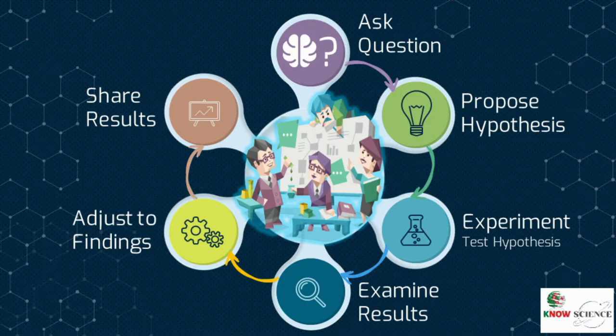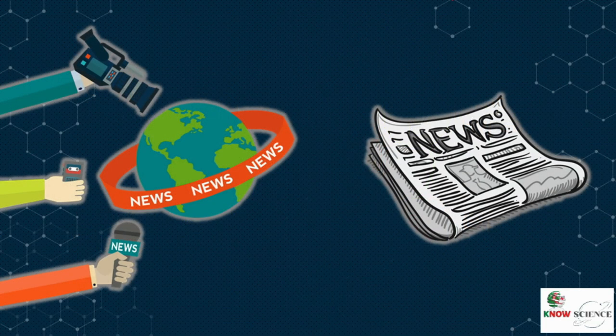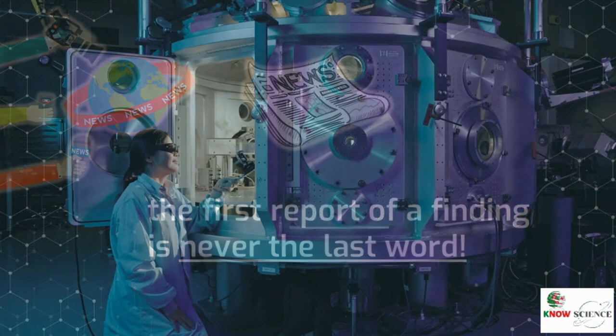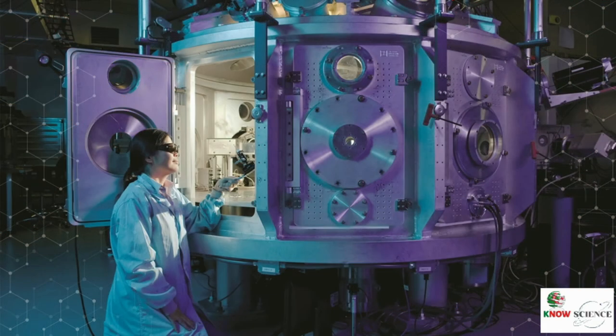Scientists share their outcomes and scientific concepts in many possible formats: an article that would be reviewed and published, a presentation at a scientific conference, a poster, or a brief report. Journalists can also quickly access the latest scientific findings and publicize them to the broader population. Consumers of this information must remember that in science, the first report of a finding is never the last word.